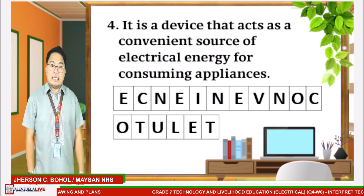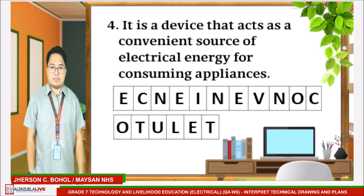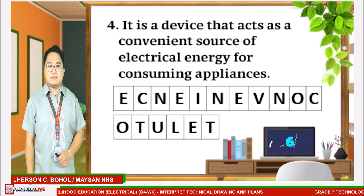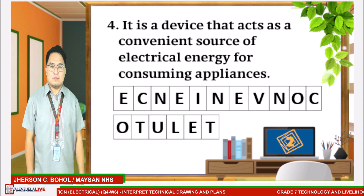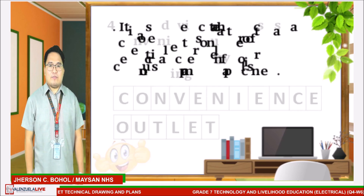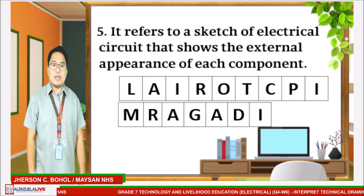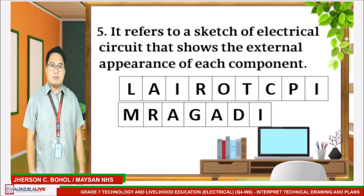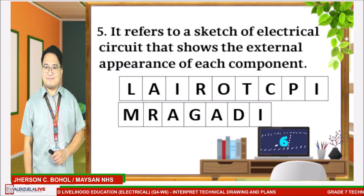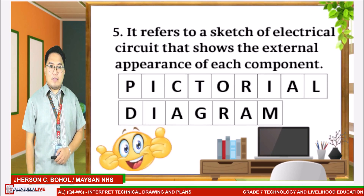Number four: it is a device that acts as a convenient source of electrical energy for consuming appliances. If you answered 'convenience outlet,' you are correct. Number five: it refers to a sketch of an electrical circuit that shows the external appearance of each component. If you answered 'pictorial diagram,' you are correct.